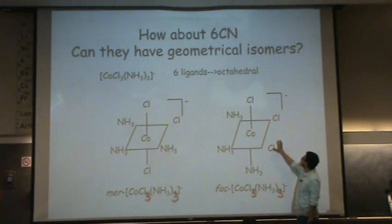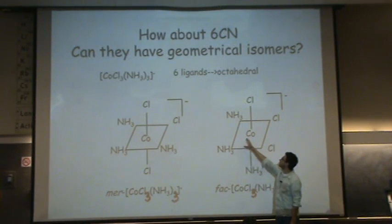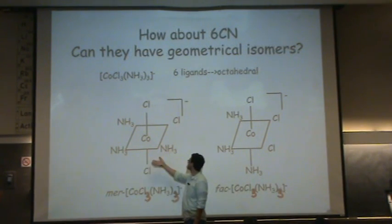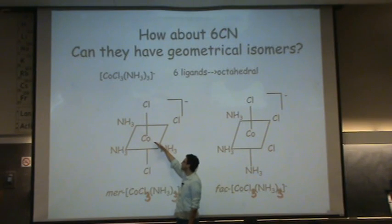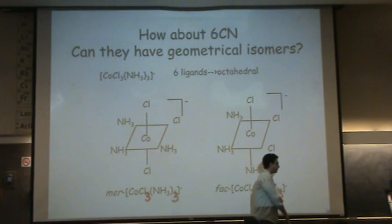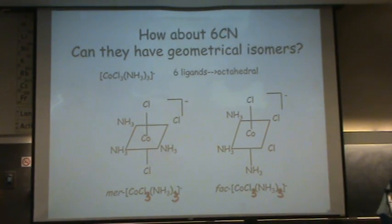Notice also, when the chlorines are fac, the NH3s are fac, on different axes. When the chlorines are mer, so are the NH3s. These two NH3s are on the same axis. This one's on a different axis. This is mer. Where the heck does that come from? Let me show you an example in 3D here.